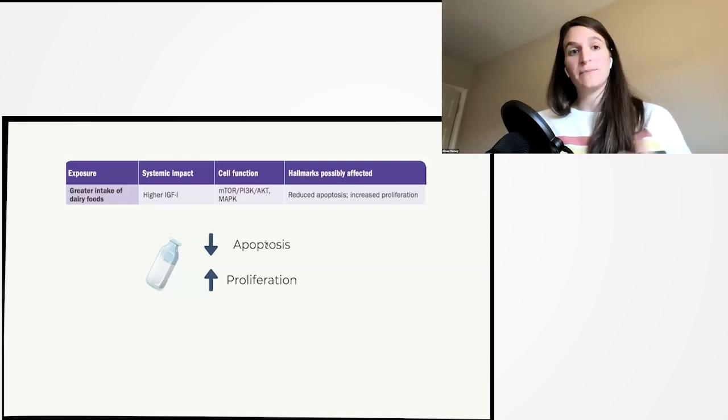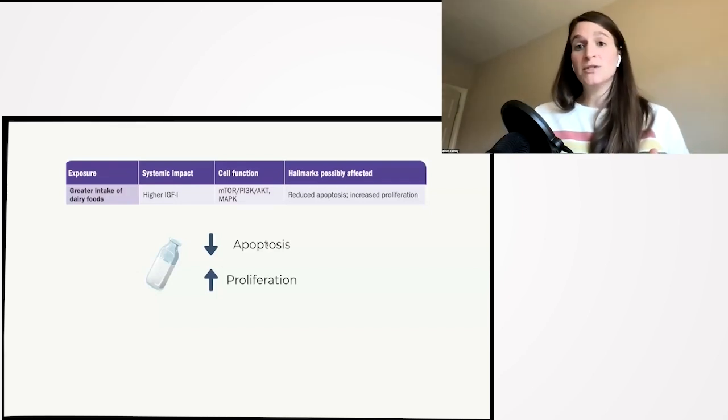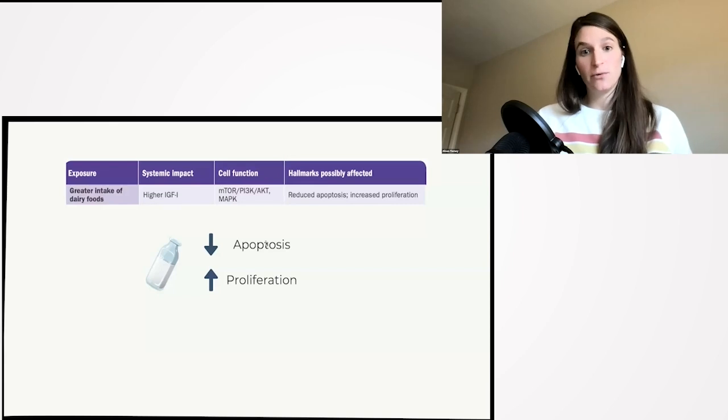On this IGF-1, it's believed that higher levels come from a greater intake of dairy foods. And therefore, there's reduced apoptosis and increased proliferation.